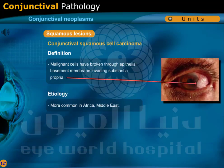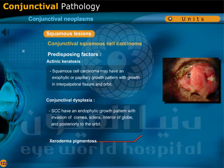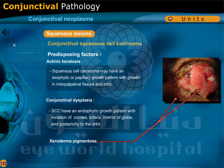In invasive squamous cell carcinoma, malignant cells have broken through the epithelial basement membrane, invading the substantia propria. It is more common in Africa and the Middle East. Predisposing factors include actinic keratosis and conjunctival dysplasia. Squamous cell carcinoma may have an exophytic or papillary growth pattern with growth into the interpalpebral fissure and orbit, or an endophytic growth pattern with invasion of cornea, sclera, interior of the globe, and posteriorly to the orbit. Xeroderma pigmentosa is also a predisposing factor.